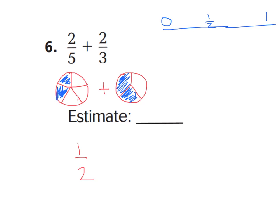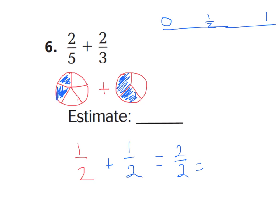And two-thirds — let's take a look here. Remember, if I had an imaginary line drawn straight down the middle to cut this into halves, I could see two-thirds is a little over one-half. It's a little greater, but it is closer to one-half than it is all the way up to one-whole. So I'm going to go ahead and call this one-half as well. So I can estimate this to be one-half plus one-half equals two-halves, which equals one-whole. So this is our estimate: about one-whole.